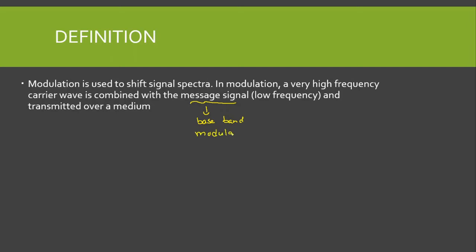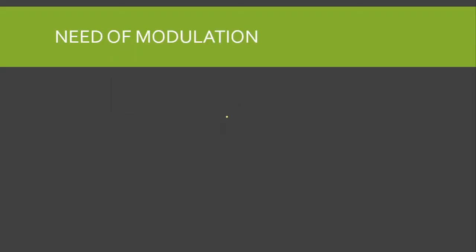Two other words used for this message signal are baseband and modulating. Now, why do we need modulation? The first reason is to reduce the antenna size. For effective radiation of power, the antenna size must be on the order of the wavelength of the signal to be transmitted.